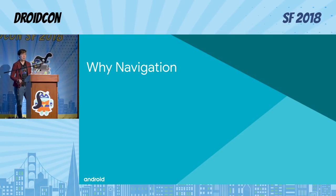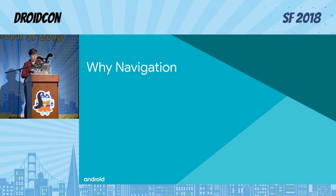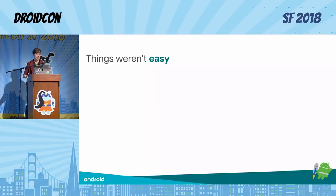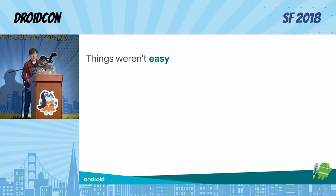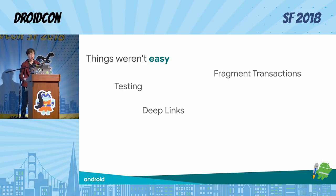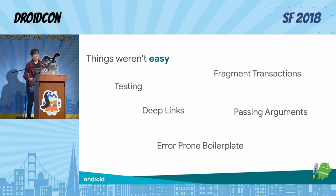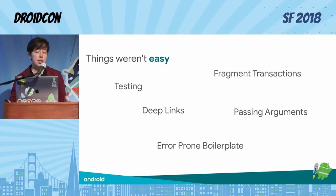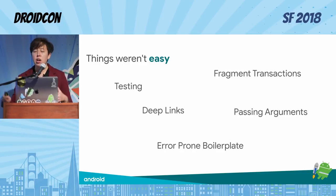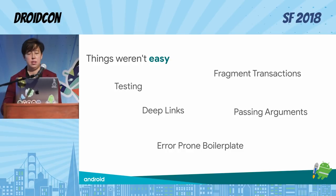Before I dive into the component, I want to talk about what the space of navigation looks like right now. If you're doing a simple move from one activity to another activity, it's pretty simple. But as soon as you start getting more complicated, there are a lot of gotchas you can run into. Testing navigation can be difficult. Fragment transactions have been historically a huge pain. Creating a synthetic deep link stack is hard. Even things like passing arguments can get tricky. And there are a lot of generic navigation UI components that require a lot of boilerplate to set up.